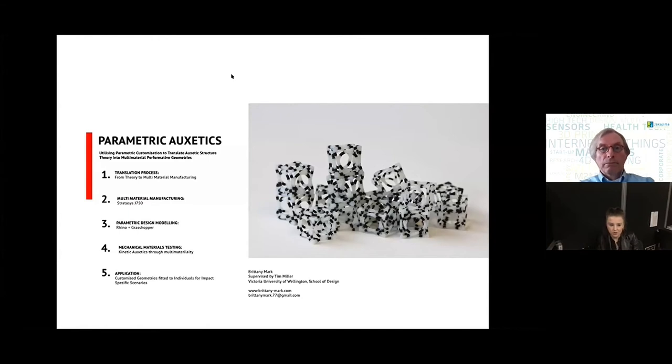So firstly there's the translation process which is the theory of auxetic structures into the realization of the manufacturing. The main way we are multi-material printing is with the Stratasys J750 printer. The parametric design modelling is primarily through Rhino and Grasshopper and then we use the materials that have been fabricated through to perform a range of mechanical testing to implement kinetic auxetics which is the 4D structures. On the right you can see unit cells of a metachiral structure which have gone through the mechanical testing and then finally once the materials are structurally sound they have been applied to specific geometries for customized scenarios.